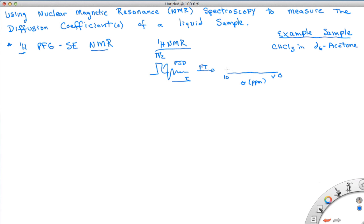And what we would see for this sample is a peak for chloroform and a peak for acetone. This would be about 8 ppm, and this would be about 2 ppm. If we looked in very fine detail at this peak, we would actually see that it's a pentet.